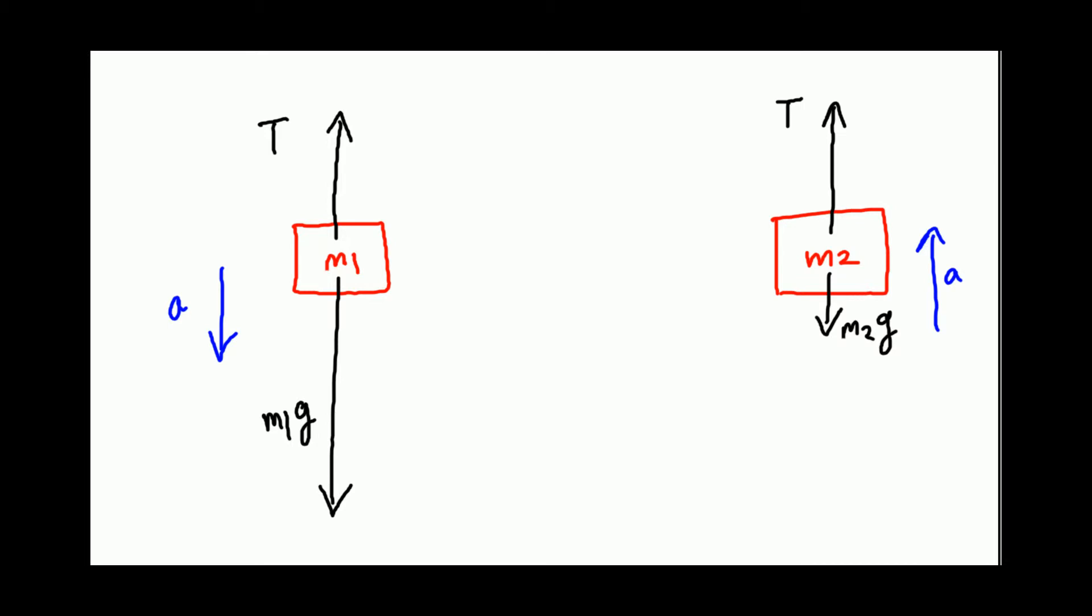All right, so we have isolated masses. We looked at the forces acting on the masses. And now, we are ready to write the equation of motion. So what is the equation of motion for M1? Gravitational force is stronger than tension. Net force is M1A. So we say, M1G minus tension equals M1A.